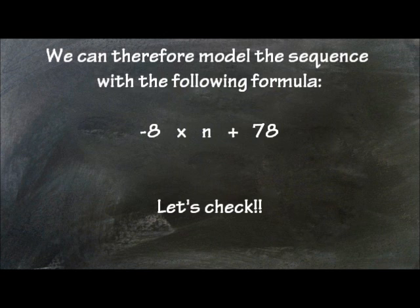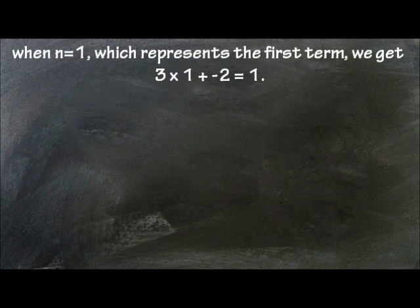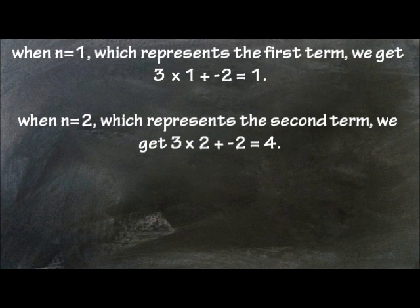Let's check. When n equals 1, which represents the first term, we get 3 times 1 plus negative 2 equals 1. When n equals 2, which represents the second term, we get 3 times 2 plus negative 2 equals 4.